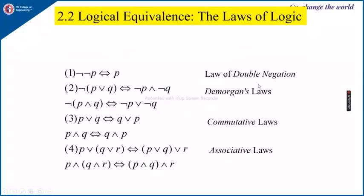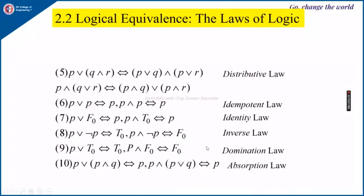The law of double negation states that NOT(NOT P) is equivalent to P. Next is commutative law: P OR Q is equivalent to Q OR P, meaning the order does not matter. Similarly, P AND Q is equivalent to Q AND P. Next is the associative law: (P OR Q) OR R is equivalent to P OR (Q OR R). The same associative law holds for AND as well.